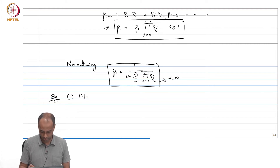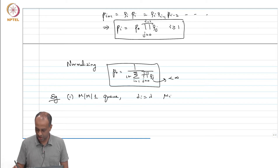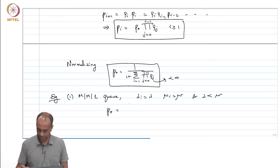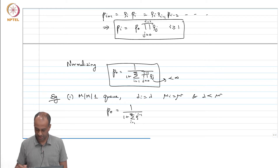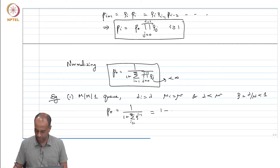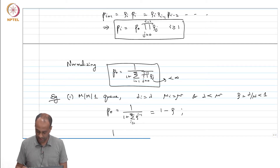The first example is an M/M/1 queue, which is very familiar to us, where each lambda_i equals lambda and each mu_i equals mu, and lambda is assumed to be less than mu. In this case, P_0 equals 1 over 1 plus the sum of rho to the power i minus 1 from i equals 1 to infinity. Since rho equals lambda over mu, which is less than 1, this geometric series gives us 1 minus rho. Then P_i equals rho^i times (1 minus rho) for i greater than or equal to 1.